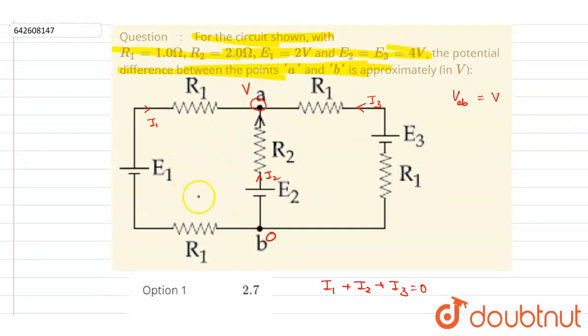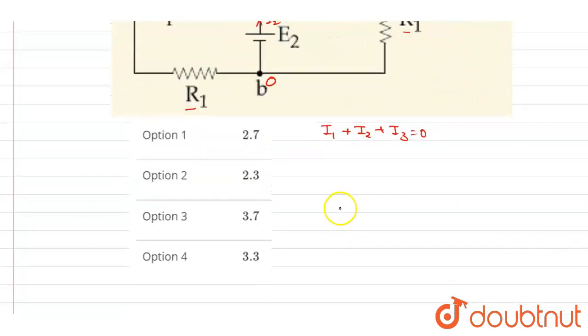Now if you see here, these two are in series and these two are in series, so you can just club them. It will be 2 ohm resistance. So if you write down, this is 2 ohm and this is 2 ohm, and this is 2 ohm.